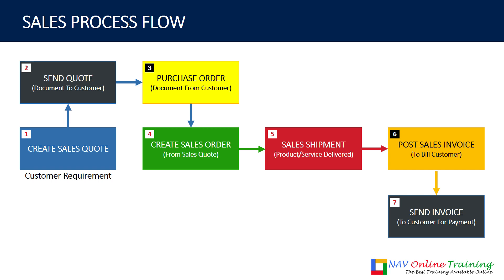The shipment and invoice can be partial. For example, if 10 items were required and you shipped only five, you will send the invoice for five. So there can be multiple shipments and invoices against the same sales order. It can also be the case that your company needs prepayment — an advanced payment before you can start working — so you will send an invoice before you actually ship the material. Based on these scenarios, you can configure things in NAV.